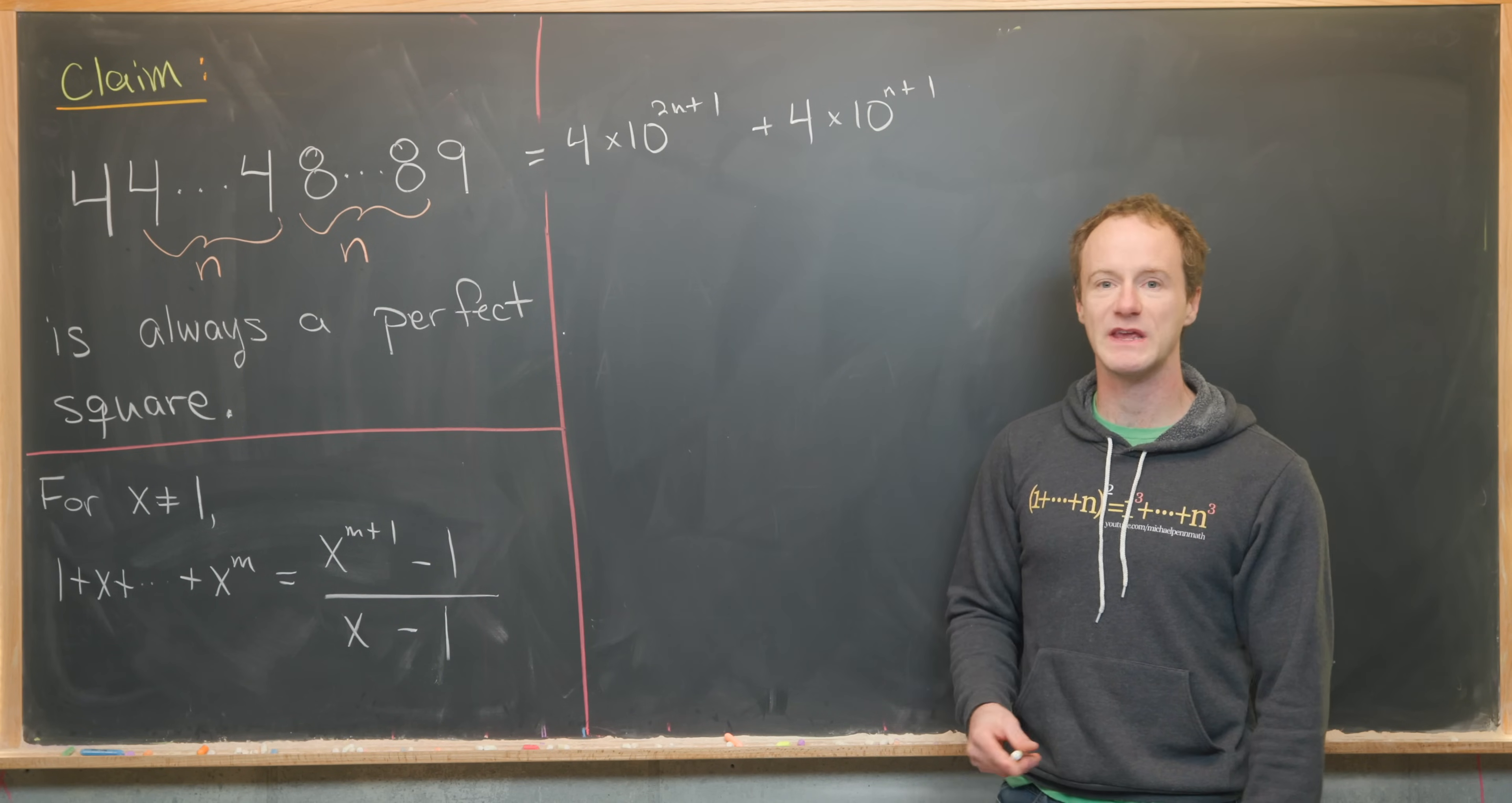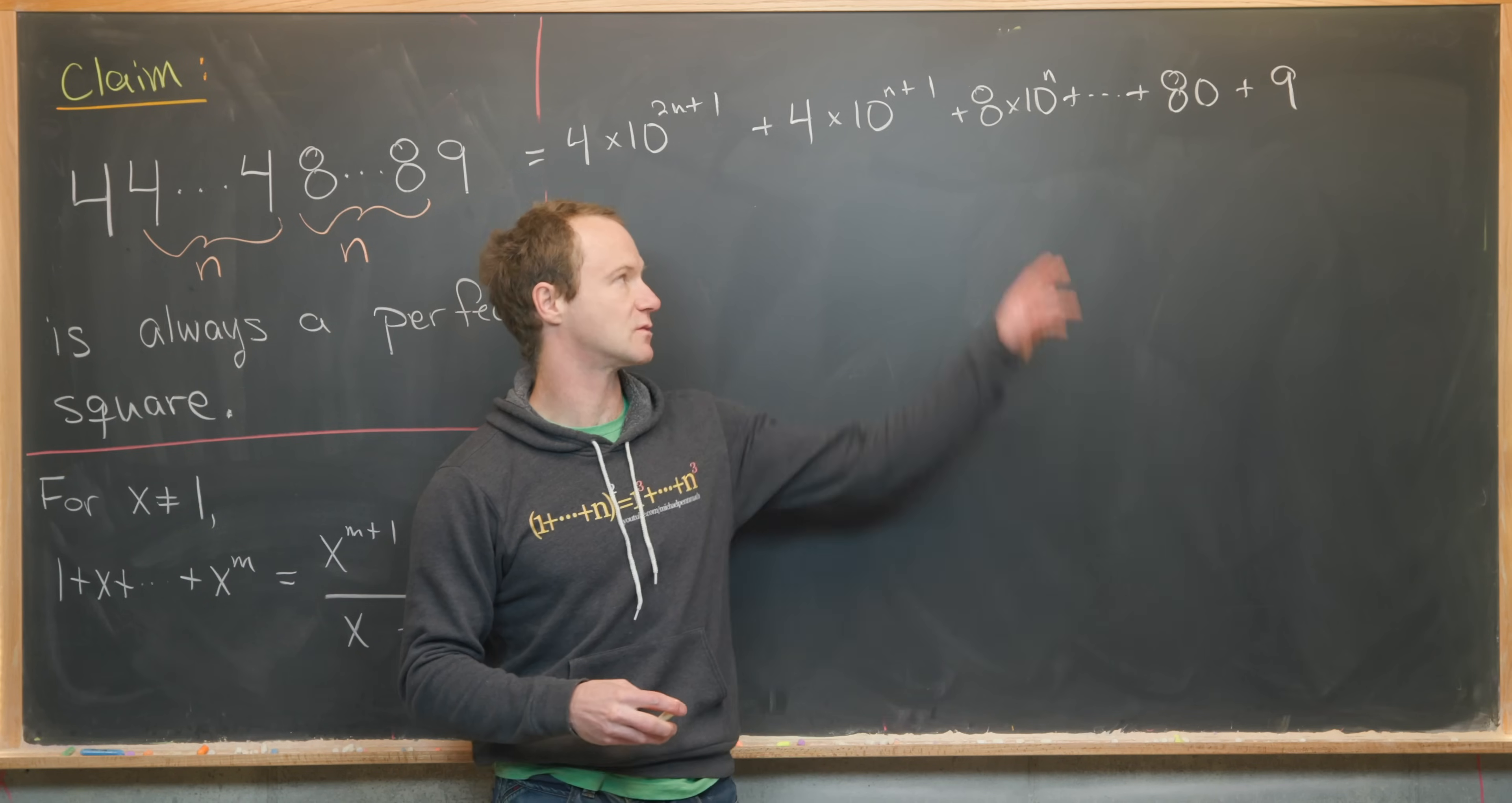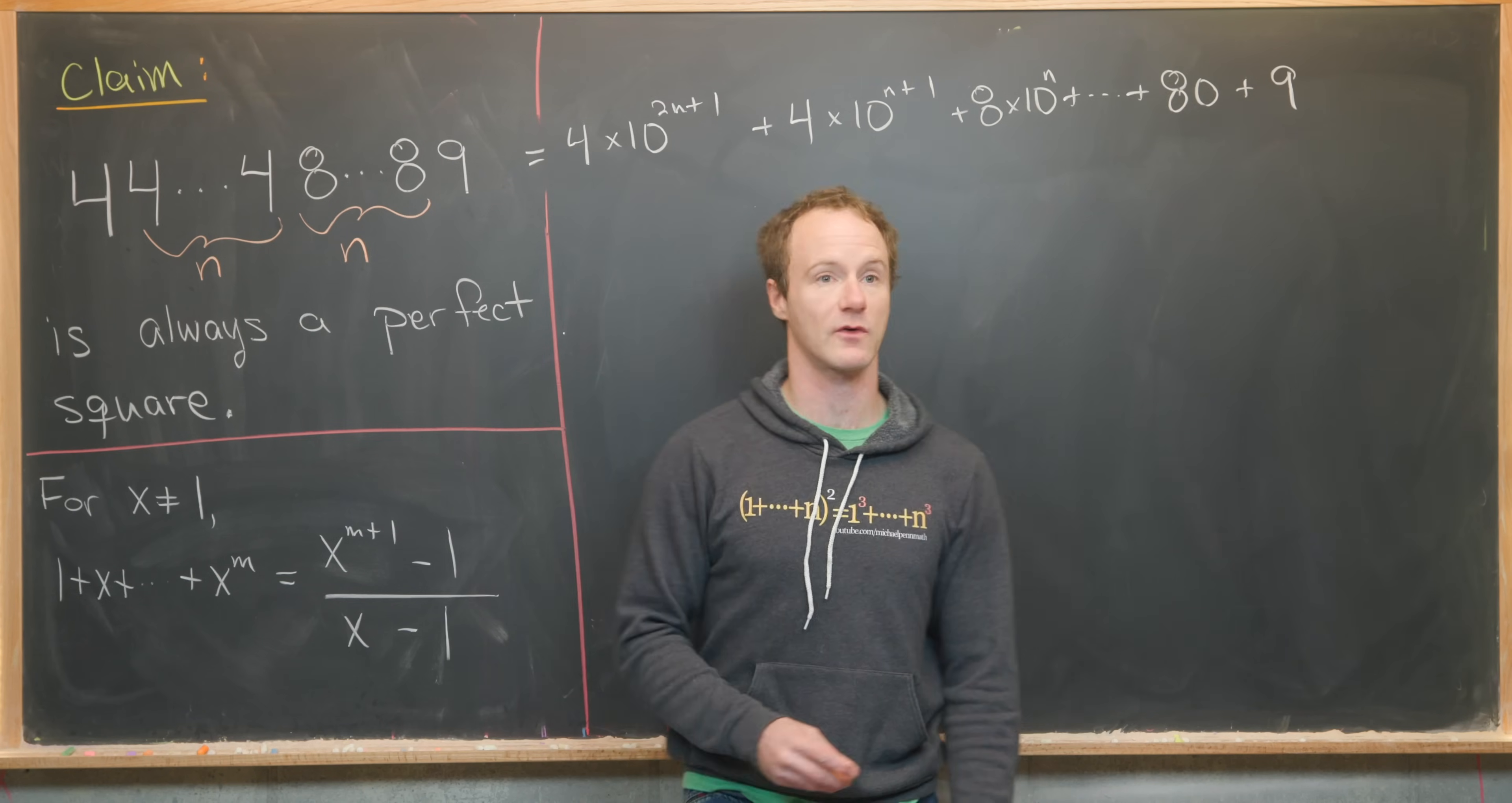And that takes care of all of our 4s. Now let's see what we get for our 8s. So our first 8 term will be 8 times 10 to the n. And our last one will be 8 times 10 to the 1, which is just 80. And then finally, we have plus our 1s term, which is just a 9. Okay, now we're going to do some grouping. And then while we do the grouping, we'll use this sum of a finite geometric series formula that we already derived.